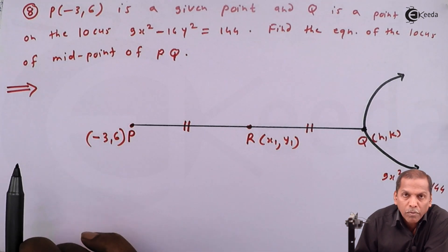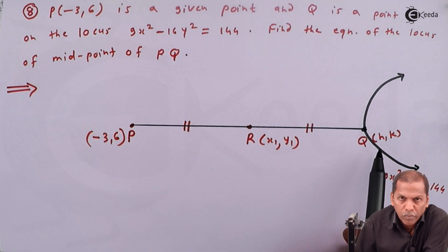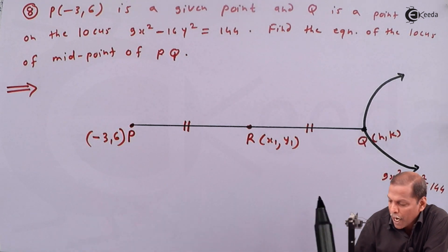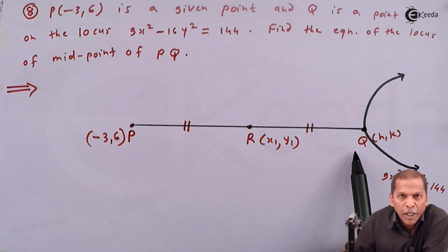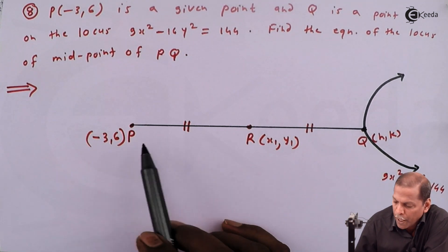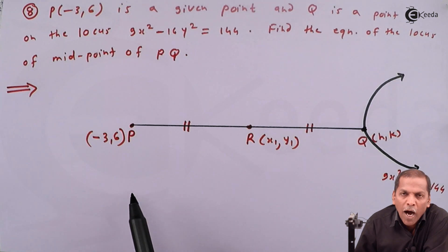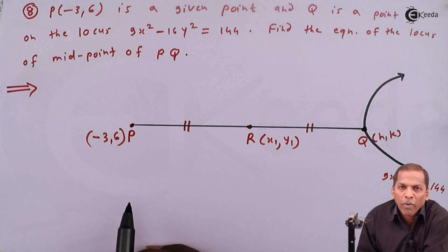For that purpose, let's see the solution. First of all, we draw the segment PQ where P has coordinates (-3, 6) and Q is a point which lies on the locus 9x² - 16y² = 144. We let R be the midpoint of segment PQ, and we have to find the equation of the locus of R. So let R(x1, y1) be a point lying on the required locus.